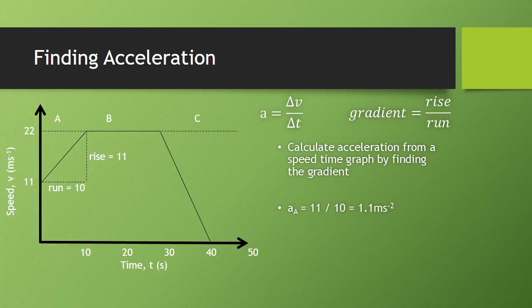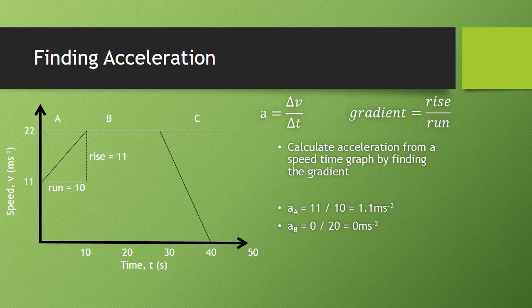Section B is a horizontal line, so we'd expect that to come out as no acceleration because the speed isn't changing. With our change in speed of 0 and a time of 20, we do get that 0 meters per second per second.